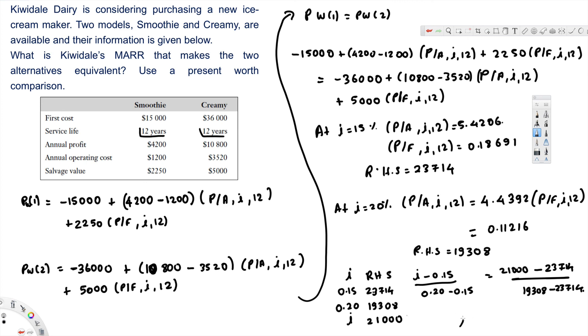And if you calculate i, you will get approximately 18%. So the question is asking what MARR makes the two alternatives equivalent. 18.1% MARR will make them equivalent. And that's how we do this kind of problem. I hope you guys find this video helpful.